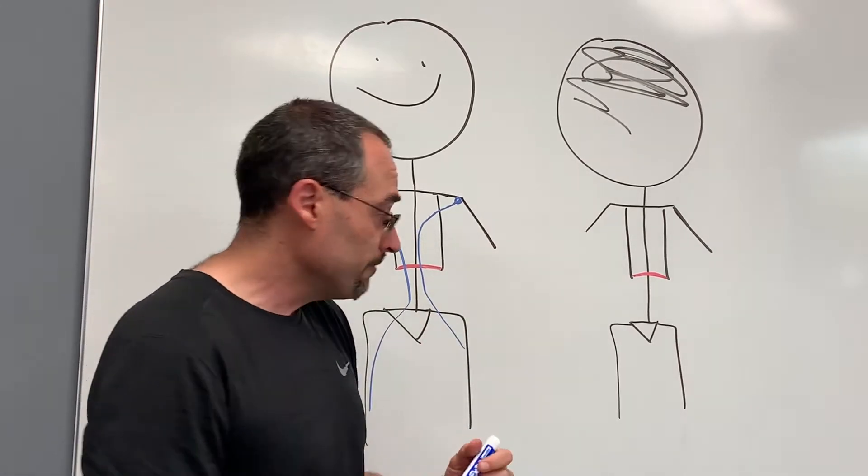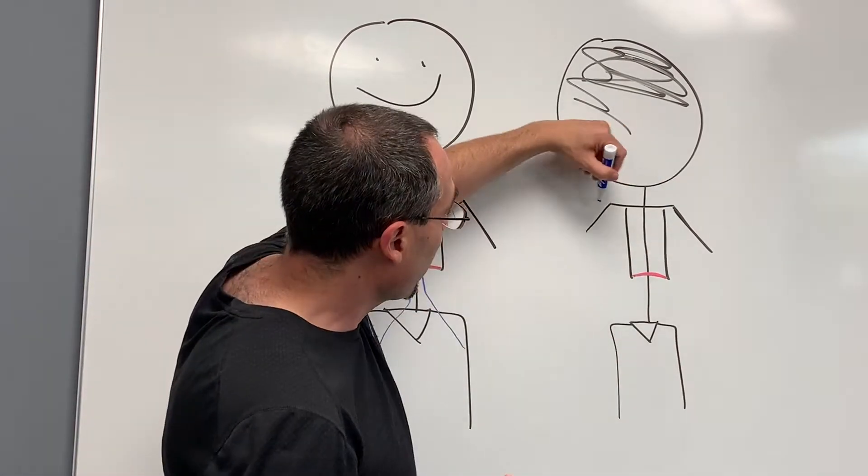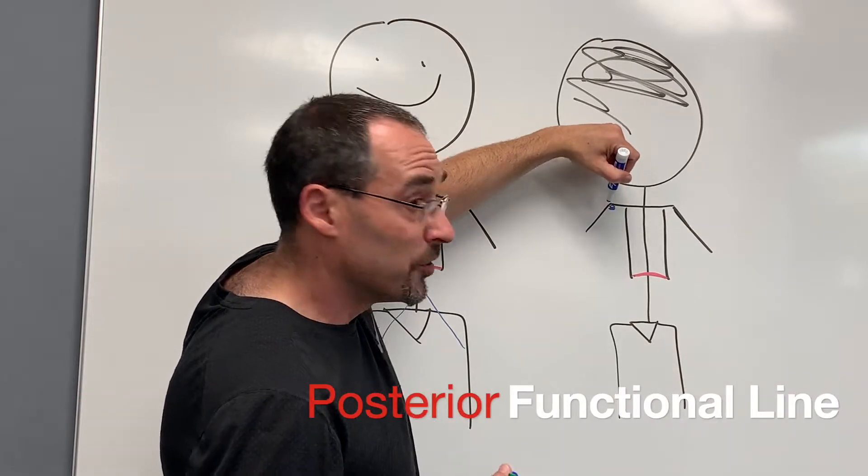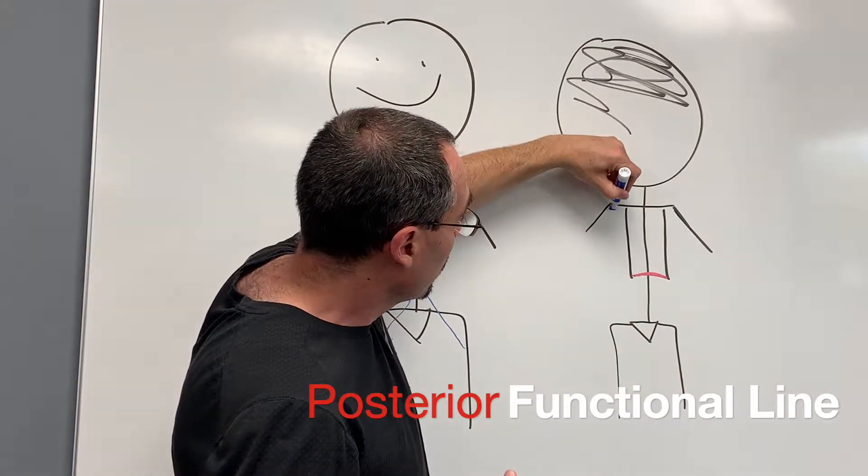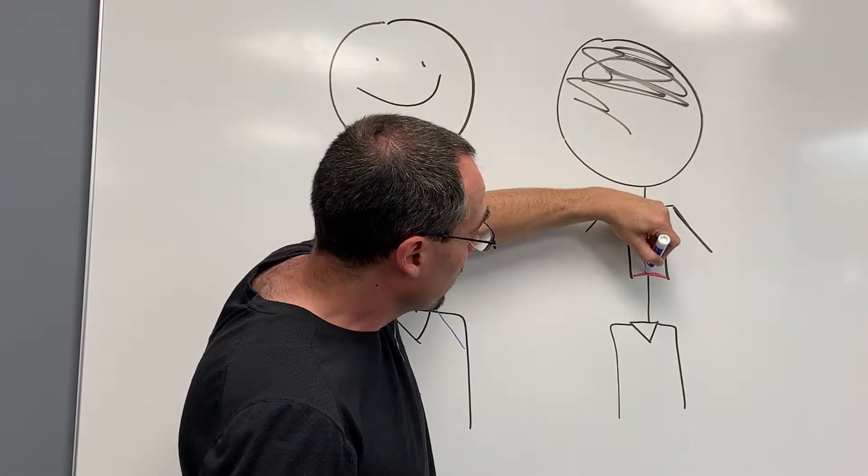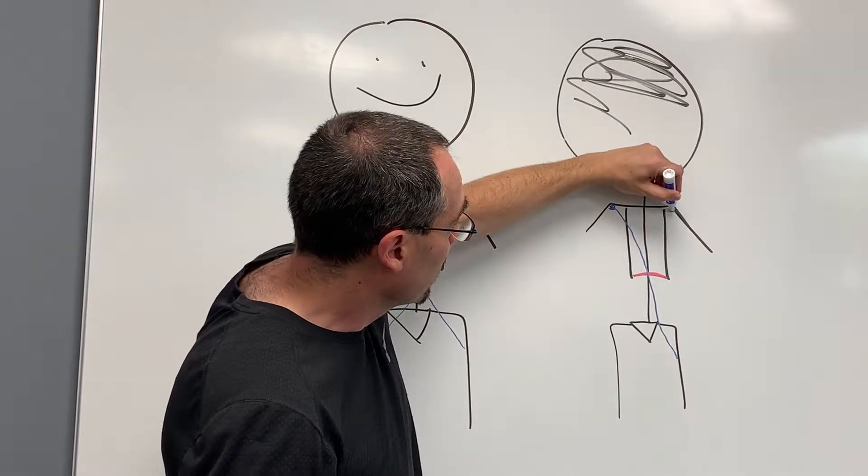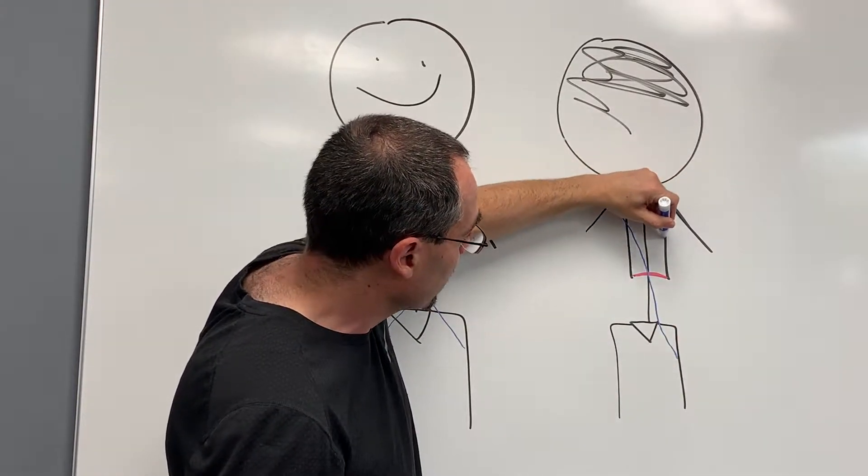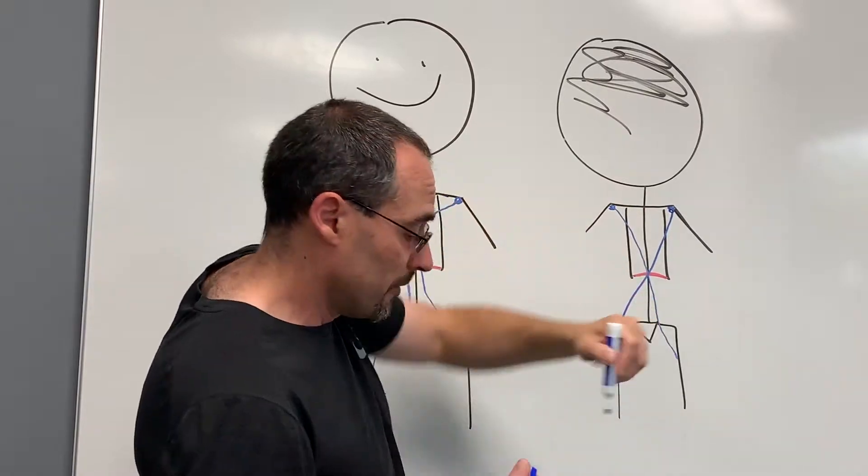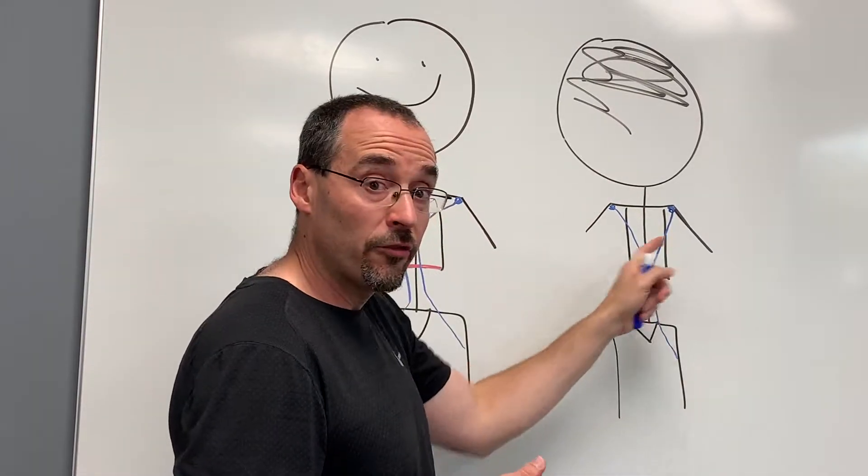So for the posterior chain, you have the posterior functional line which actually comes down here and then crosses into the hips. Starts up here, this one crosses down into the hips. So this is the posterior functional line.